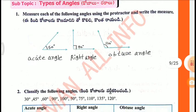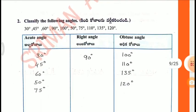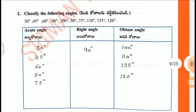Continuing: Second one is right angle. Third one is obtuse angle, 110 degrees. Second one is obtuse angle, 110 degrees. Classify the following angles.